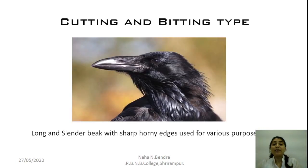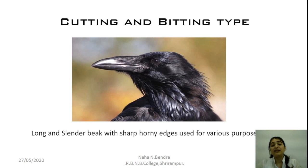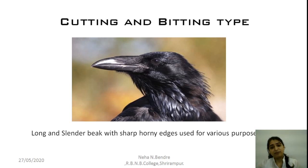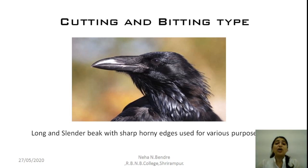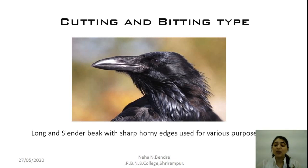Next is the cutting and biting type of beak, with the crow as an example. The crow's feeding habit is of mixed type — it is carnivorous as well as eating available food material, so it is a mixed type of feeding habit. The crow has a long and slender beak with sharp, horny edges, used for various purposes such as building the nest, protection, and feeding the young ones.